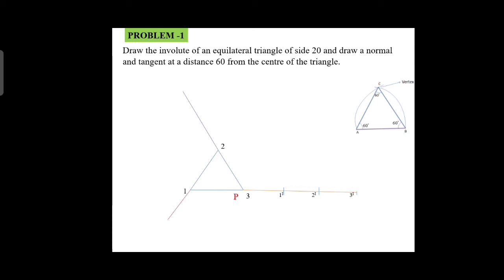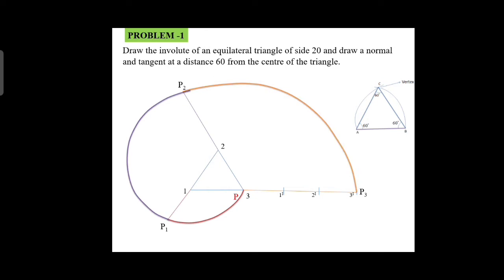Now measure the distance between P and 1 dash. With 1 as center, locate point P1. P to 2 dash is the radius and 2 as center, locate point P2. P to 3 dash is the radius, locate point P3 on the third point extension line. Finally, join all the points from the starting point to get the smooth involute curve.